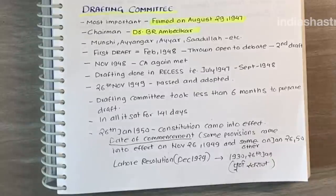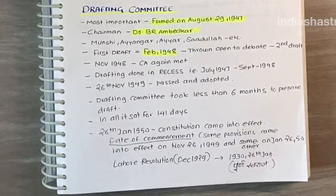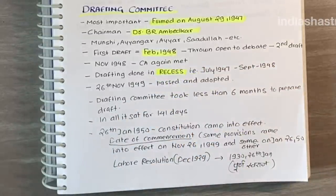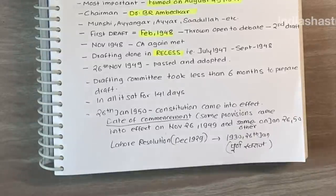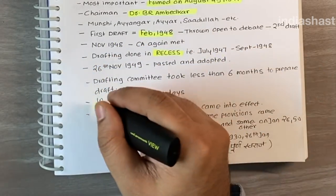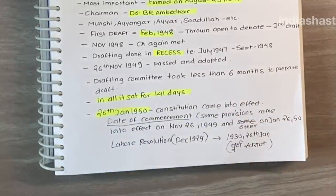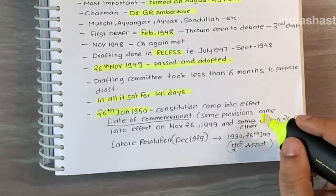The drafting committee produced its first draft in February 1948. After that, it was thrown open to debate, and then a second draft was produced. In November 1948, the constituent assembly met again. The drafting process was done in recess — that is, between July 1947 and September 1948 — when constituent assembly meetings were not taking place. The drafting committee took less than six months to prepare the draft and sat for 141 days in all. On 26 January 1950, the constitution of India came into effect, known as the date of commencement. Some provisions came into effect on November 26, 1949, and other provisions on 26 January 1950.